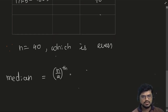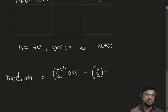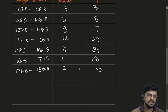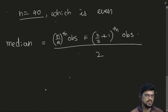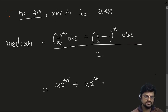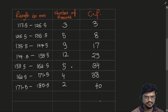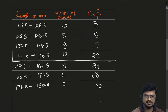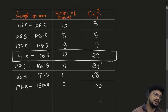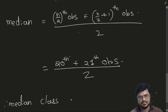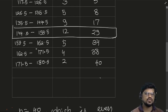The number of observations are 40, which is even. So your median will be the (n/2)-th observation plus the (n/2 + 1)-th observation — that is the 20th observation plus the 21st observation, divided by 2. You can see that 29 is there, so both the 20th and 21st observations come in the same row. Therefore, the median class is 144.5 to 153.5.